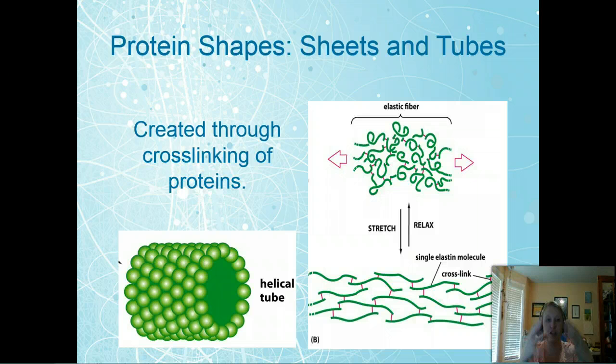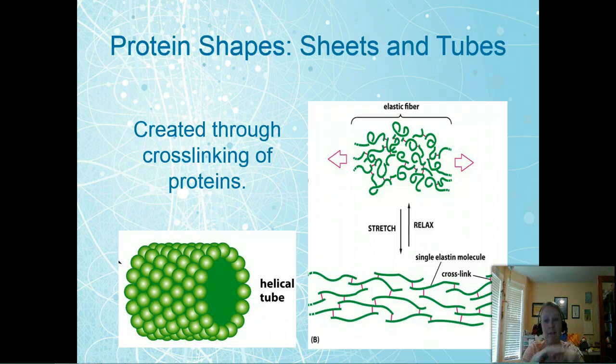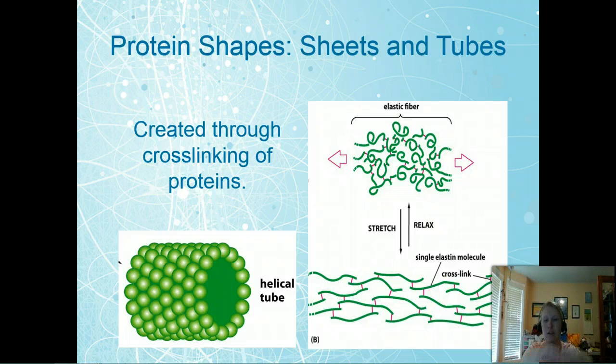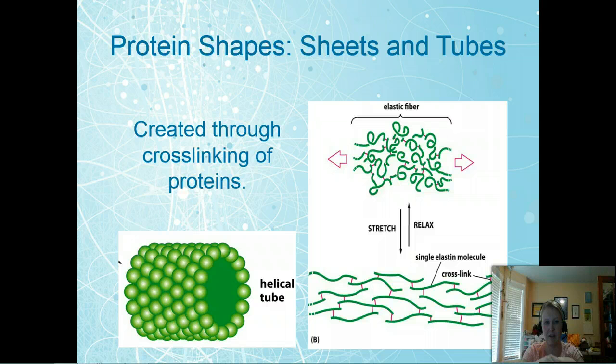And then our last protein shape is sheets and tubes. And these sheets come from the cross-linking of the peptides. And you can see that here. And they can either lay flat in sheets or they can wrap up into tubes. And these are really important for a variety of functions within the cell. And you'll see them pop up throughout the rest of the semester. So just make sure you have an understanding of that.